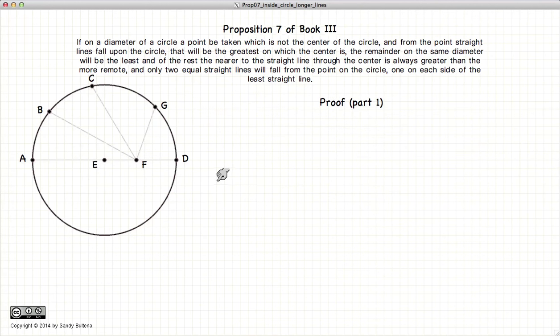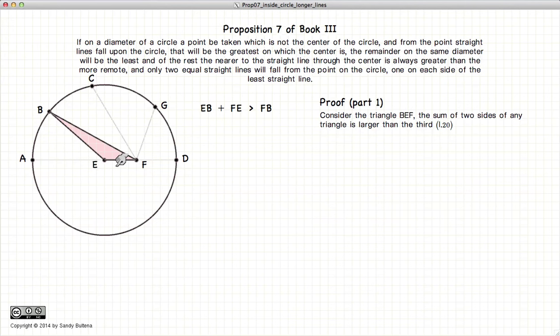Now we carry on to the proof. So the first part of this proof will be the inequalities. If you remember from Proposition 20 of Book 1, the sum of two sides of a triangle is always greater than the third.